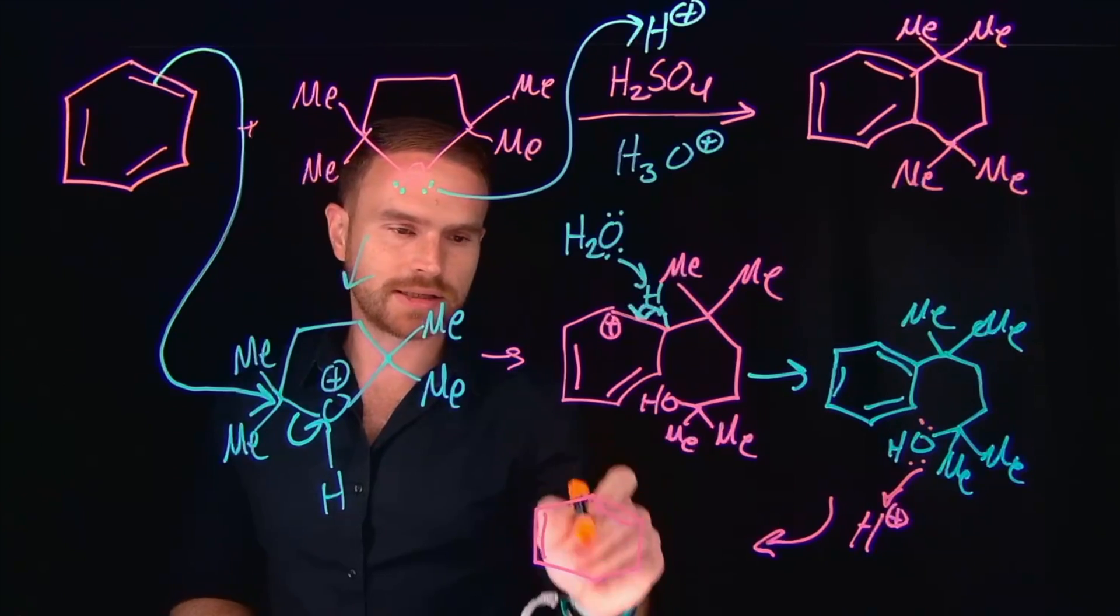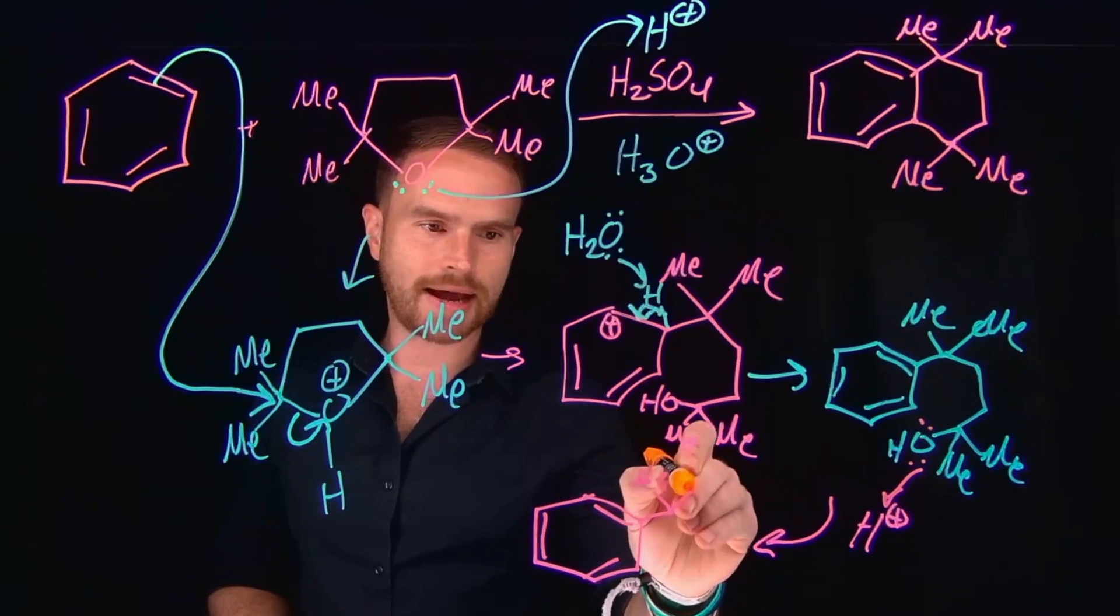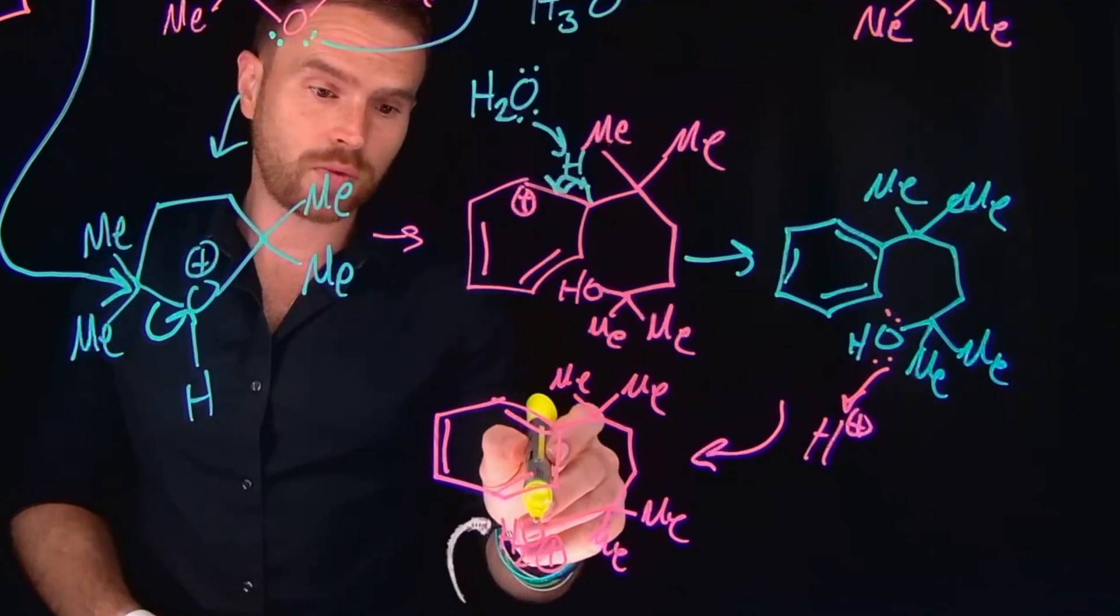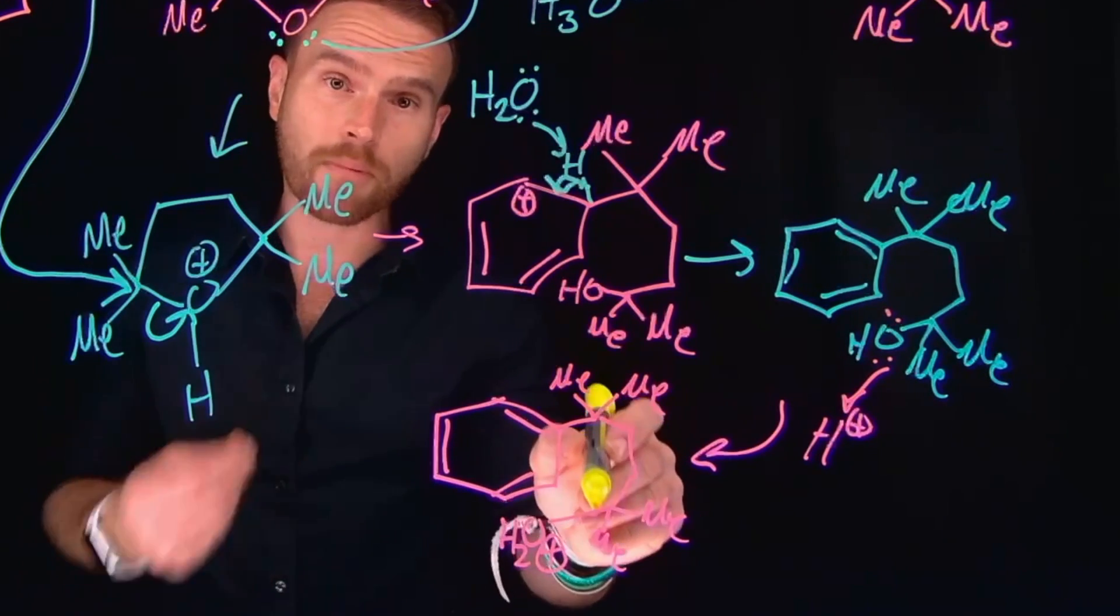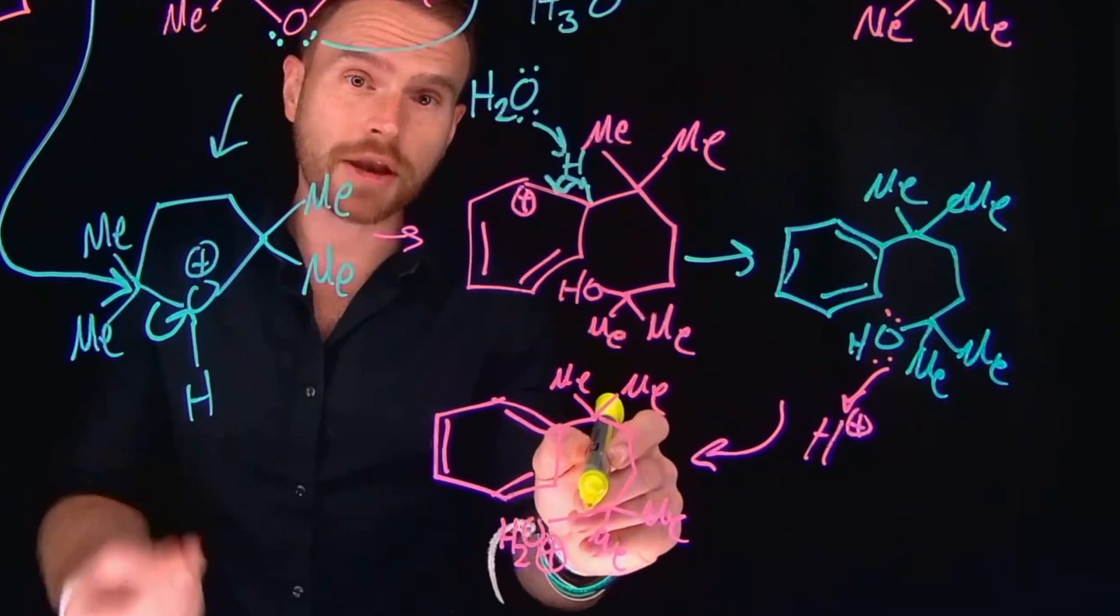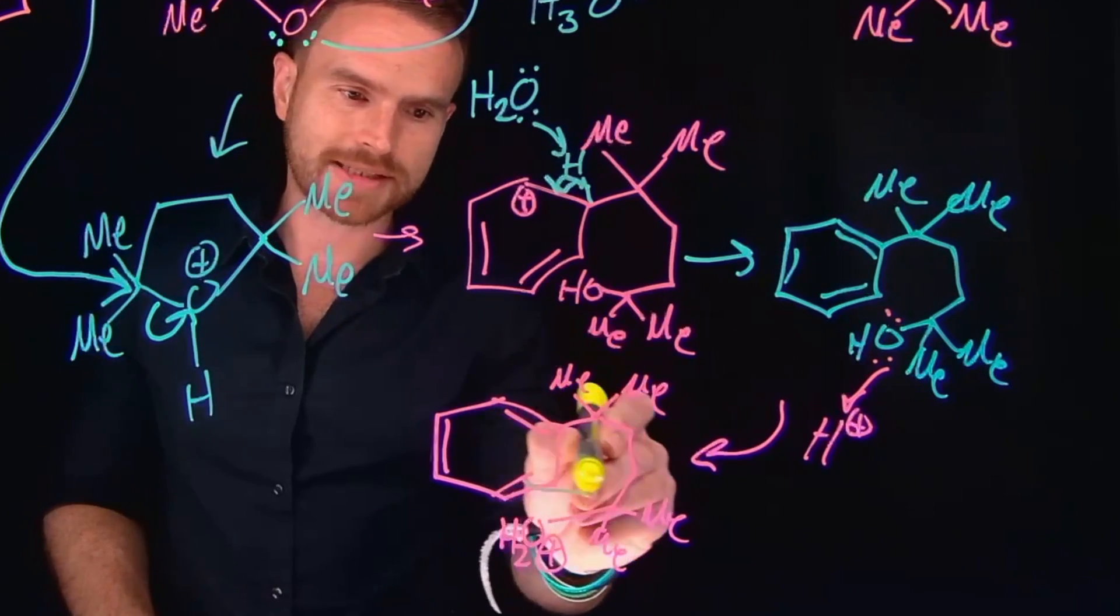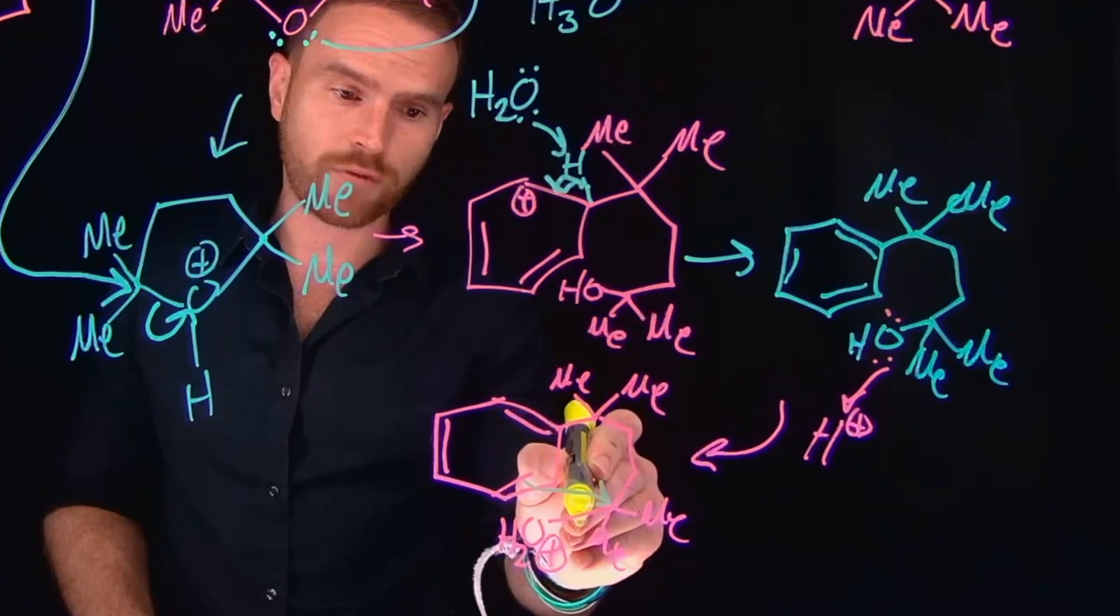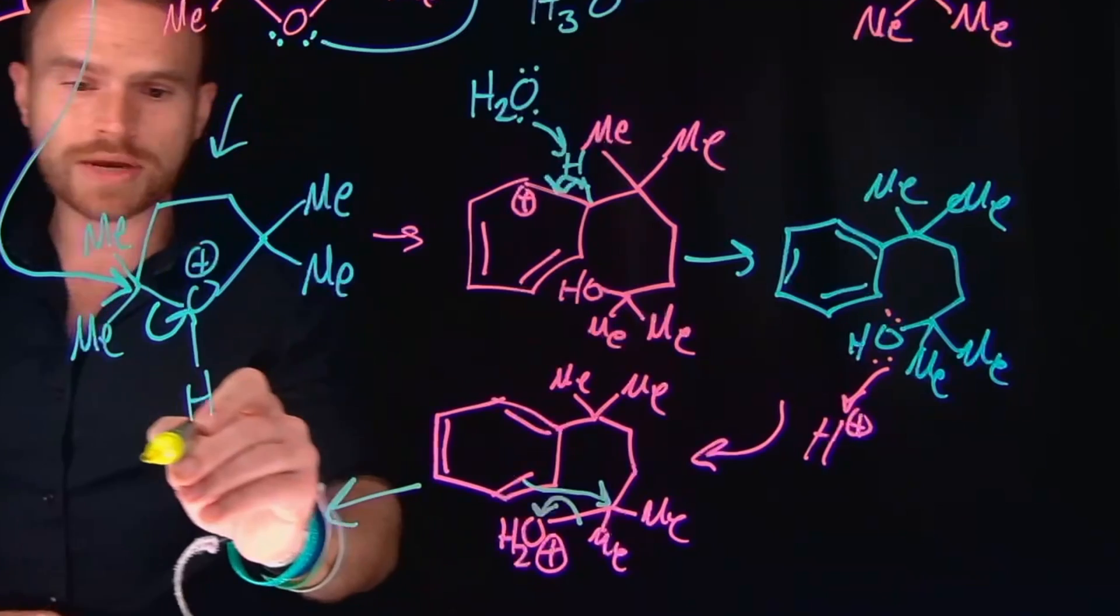We've regenerated this benzene ring and we've also protonated that alcohol. In doing so, we've made this oxygen positively charged, which again makes this carbon a more potent electrophile. We can do another example of an electrophilic aromatic substitution, where now these pi electrons can come and attack this position. This will kick off water as our great leaving group, and that is going to give us another arenium ion.